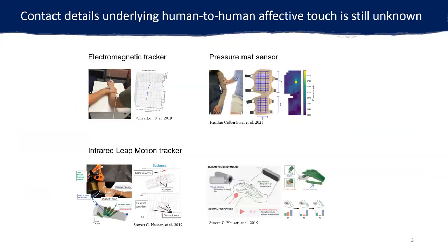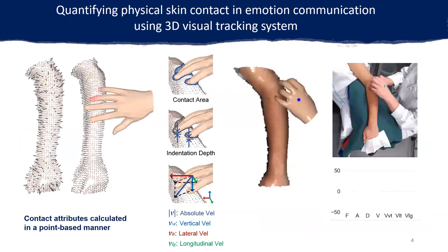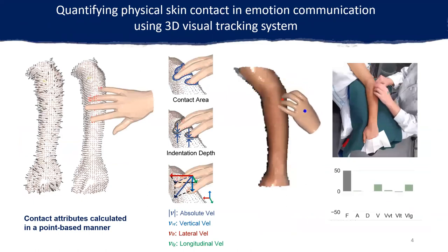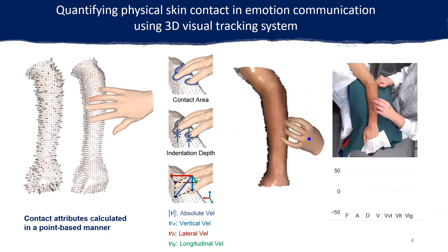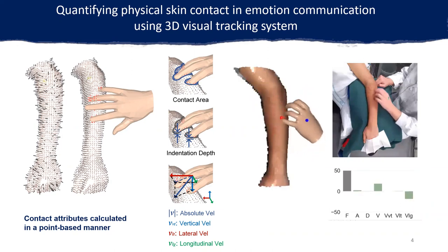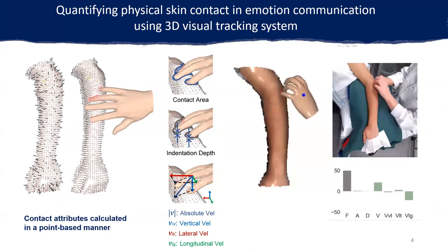Among tracking techniques commonly used for human touch, motion trackers can only capture the position or skeleton information, while pressure mass sensors block the direct contact. Therefore, we developed a 3D visual tracking system in this work that captures the toucher's hand and the touch receiver's forearm as a 3D point cloud and mesh.